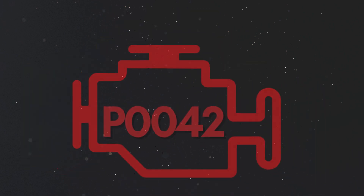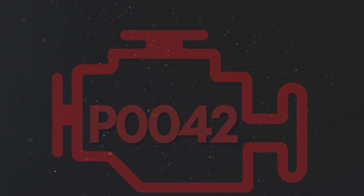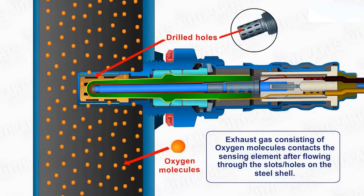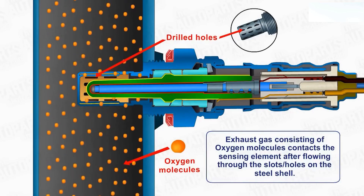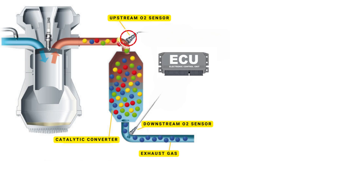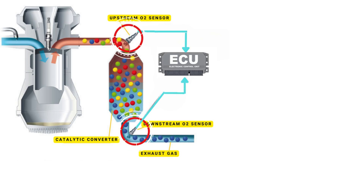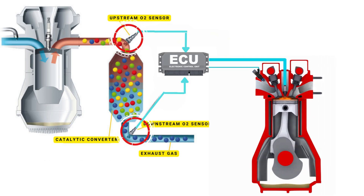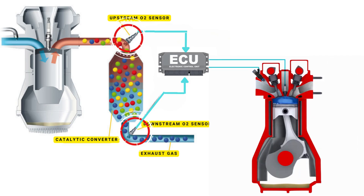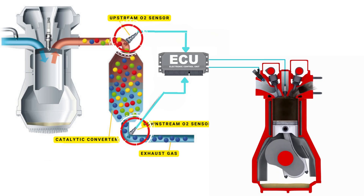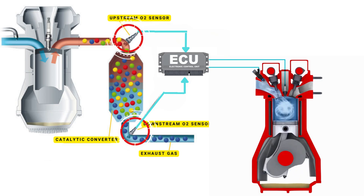Now let's learn why P0042 was triggered. Your vehicle's oxygen sensor plays a vital role in monitoring the oxygen content in the exhaust gases. It sends this data to the ECU, which then uses it to maintain the optimal air-fuel ratio. The ECU controls the air-fuel ratio by adjusting the timing of the engine's valves, allowing just the right amount of air and fuel to enter the combustion chamber.